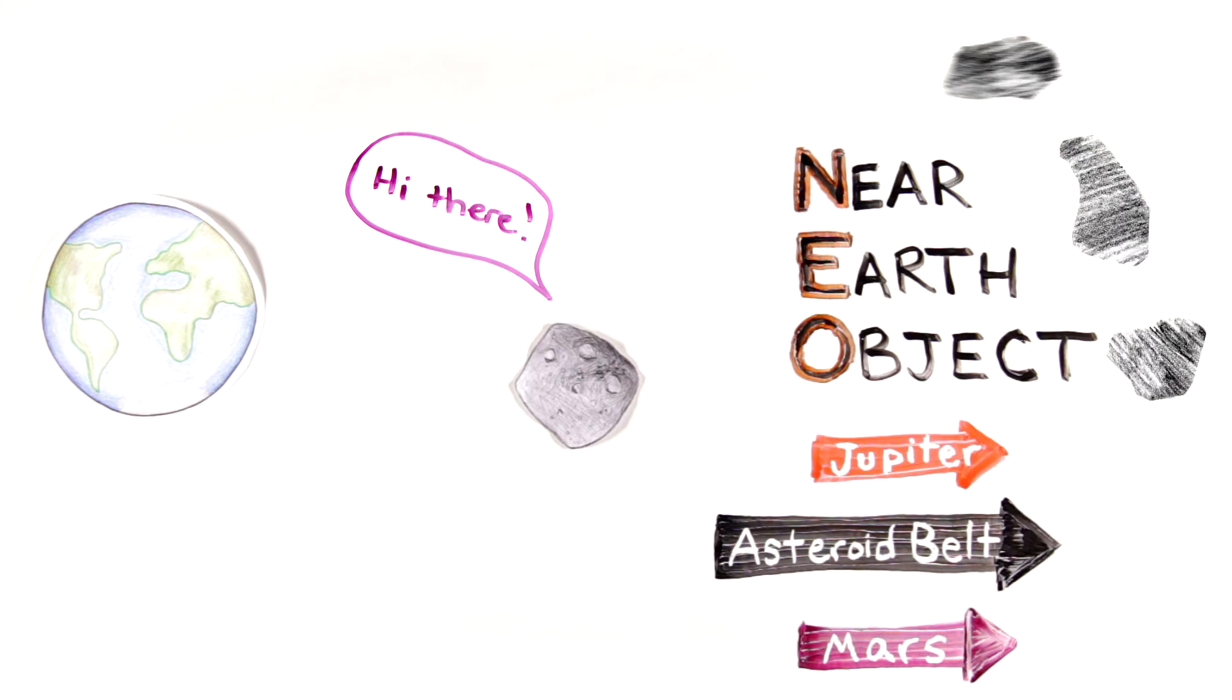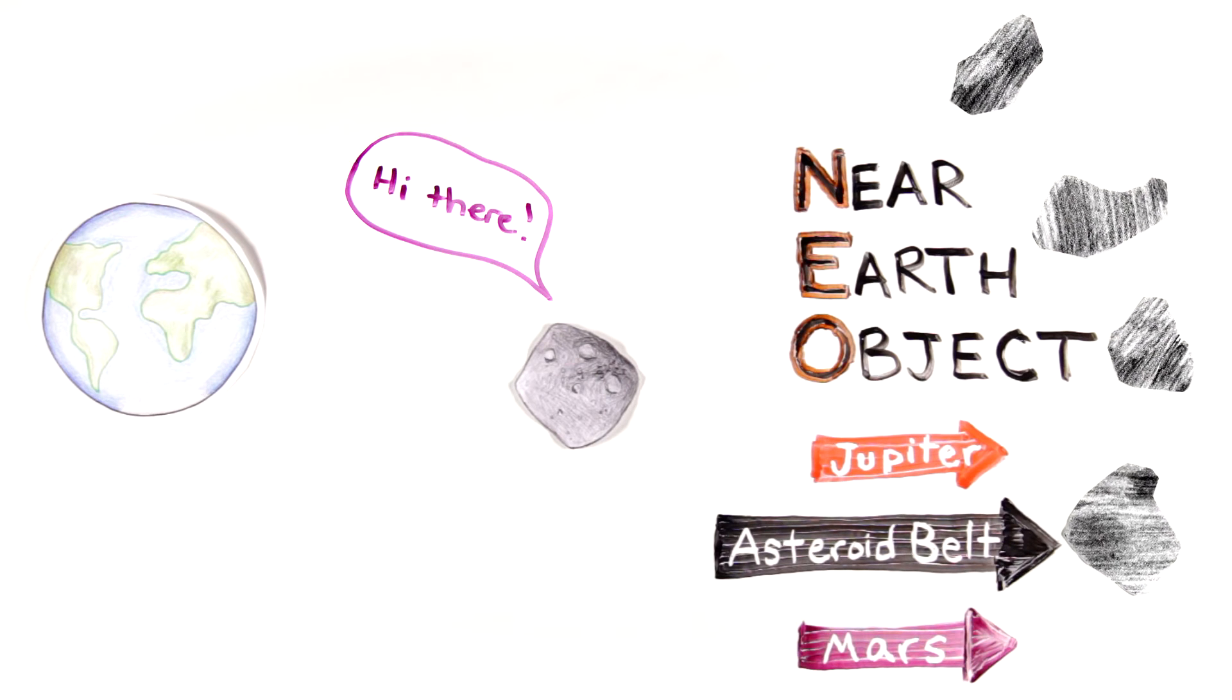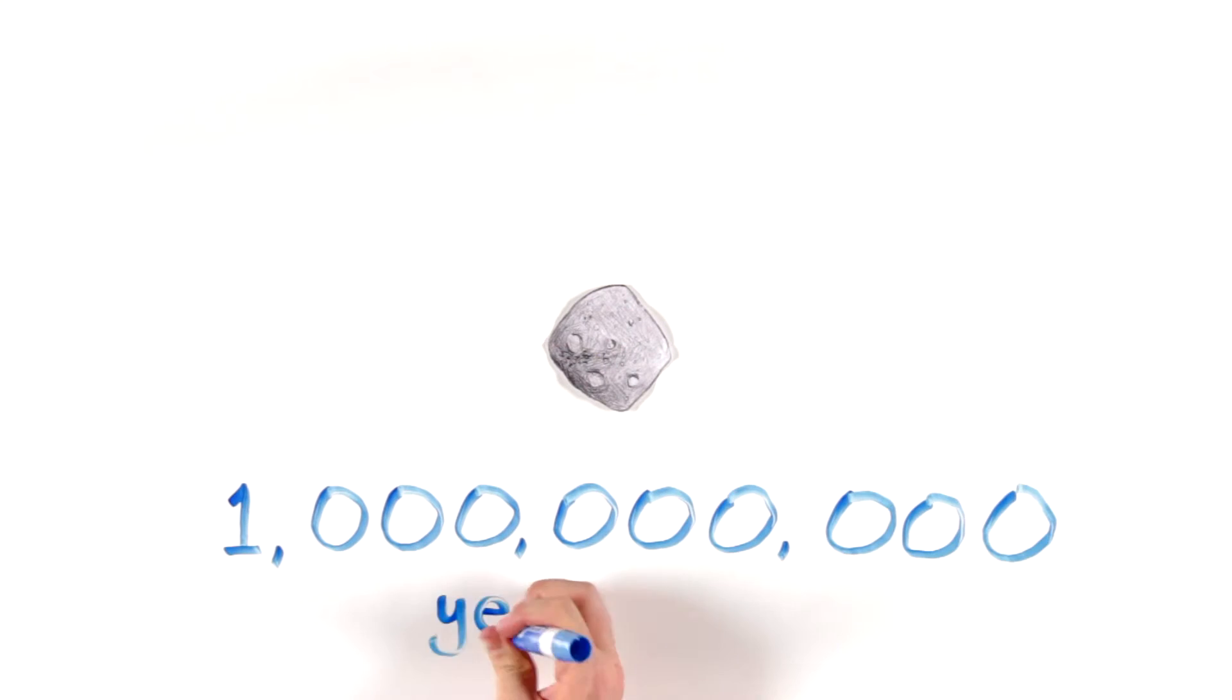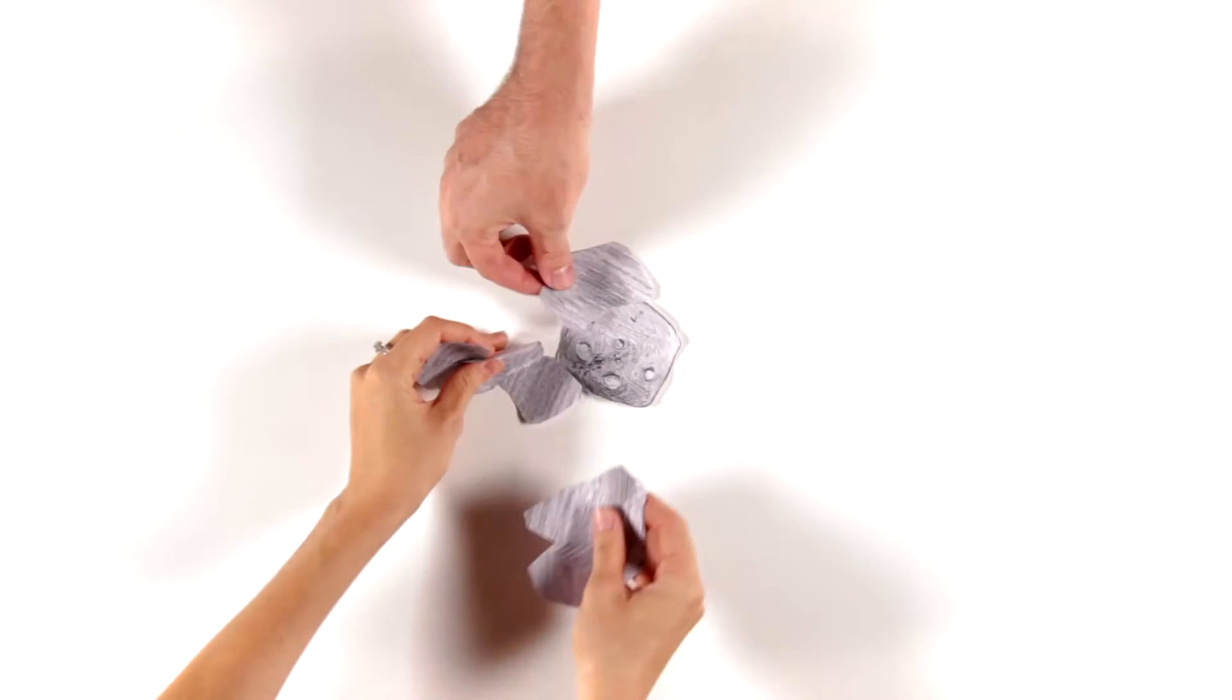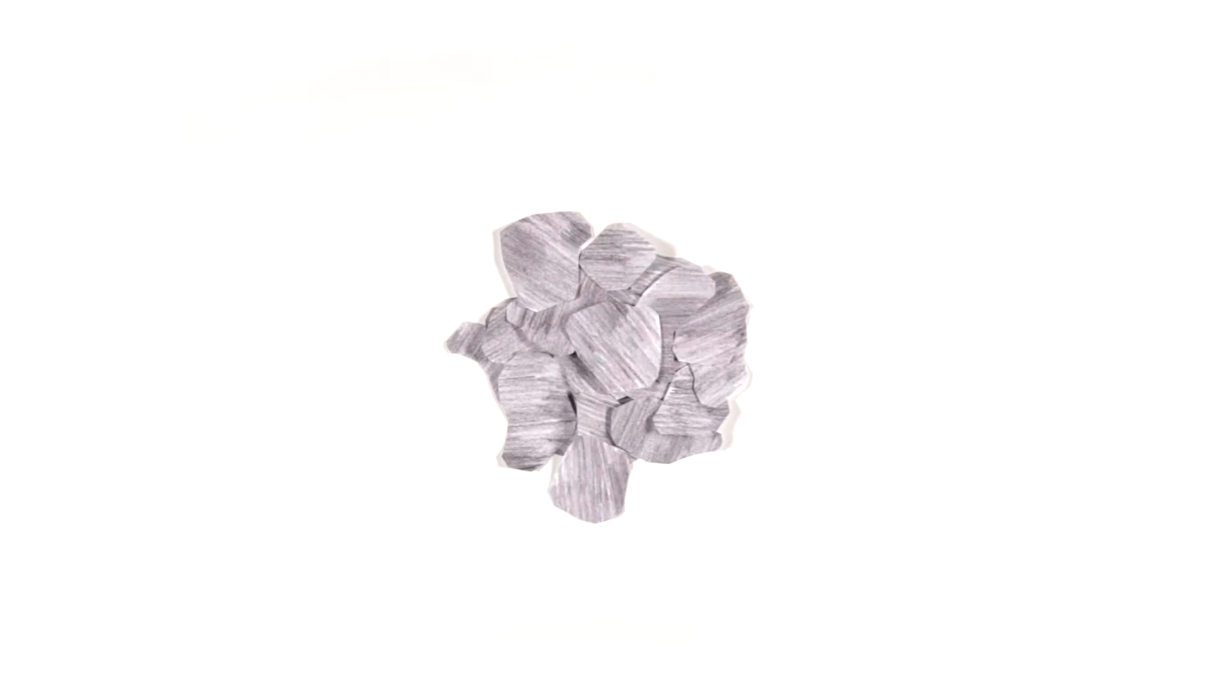But some asteroids, like Bennu, slip out of the asteroid belt and become near-Earth objects. A long, long time ago, scientists think about a billion years ago, Bennu wasn't its own asteroid. It was part of a giant asteroid in the asteroid belt.